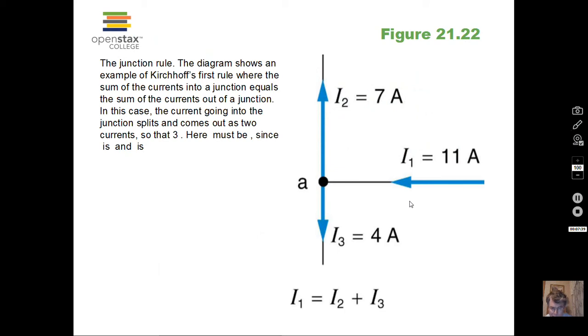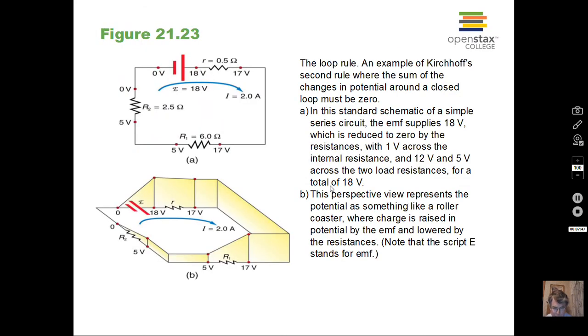So we have the current rule at the nodes, the junction. The sum of the current coming in equals the sum of the current going out. And then we have this rule regarding potentials. Around any closed loop in our drawing, the sum of the changes in potential is zero. We have some positive potentials. As we go across a battery in the direction of the current from negative to positive, it's going to be a positive jump in potential.